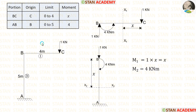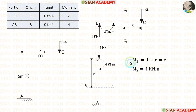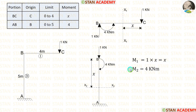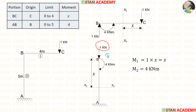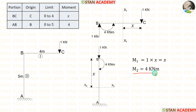Now let us make the sections. We have to make two sections: one in span BC and one in span AB. Now let us calculate M1 — we take moment about the first section. Up to the section we are having only one load, that is 1 kN, giving M1 = 1 kN × x = x. Now let us calculate M2 — we take moment about the second section. Up to the section, the point load 1 kN has no perpendicular distance, so we cannot consider it. We are having only one moment, that is 4 kN·m, so M2 = 4 kN·m.